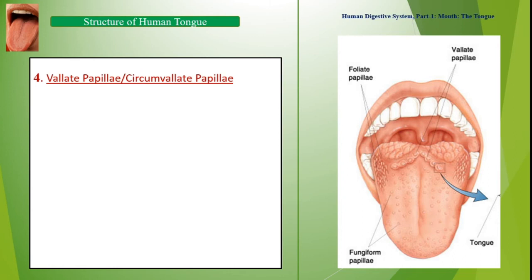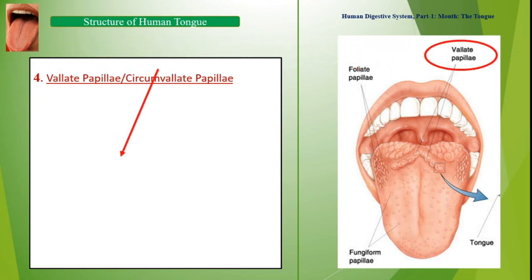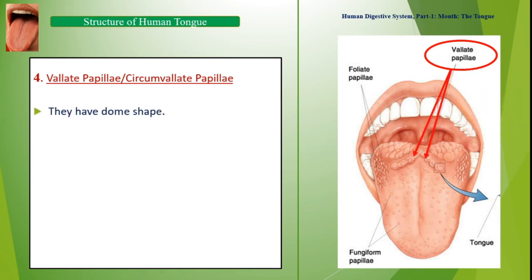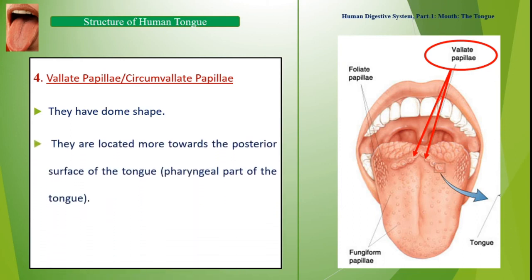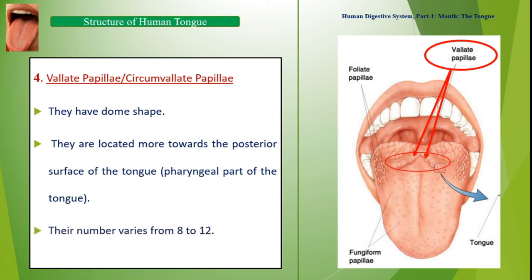Vallate papillae, also called circumvallate papillae, have a dome shape. They are located more towards the posterior surface of the tongue — that is, towards the pharyngeal part of the tongue. Their number varies from 8 to 12.